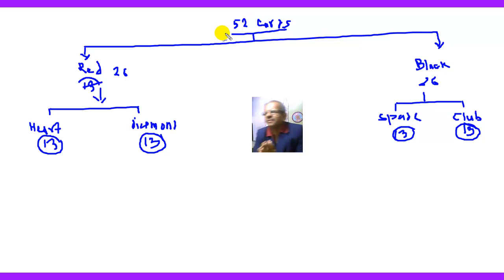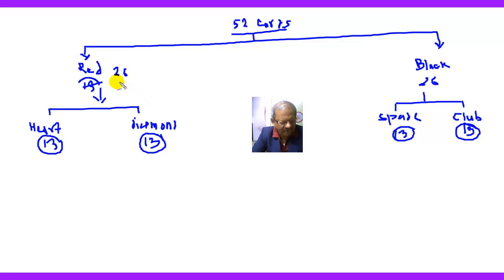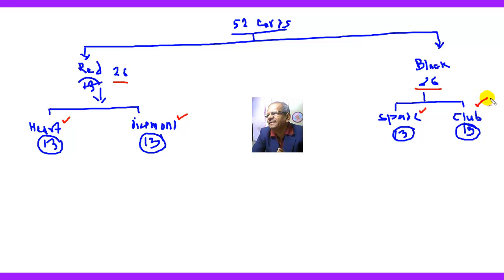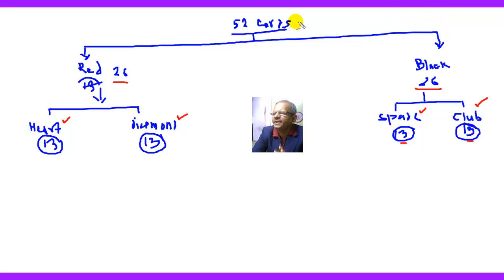So there are 52 cards total, divided into two parts according to their colors. Red colored cards are 26 in number and black colored cards are 26 in number. The red cards are further divided into heart and diamond — 13 each. Black cards are divided into spade and club — 13 each. All four types are 13 in number, and 13 times 4 gives 52 cards.